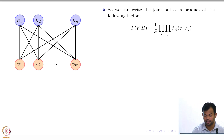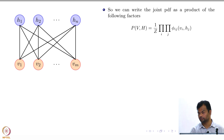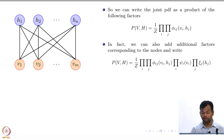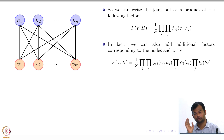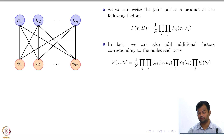Let us remember that the visible space belongs to {0,1}^m and hidden space to {0,1}^n. Now, we can also add additional factors. Can anyone guess why I have added these two extra factors corresponding to visible variables and hidden variables?